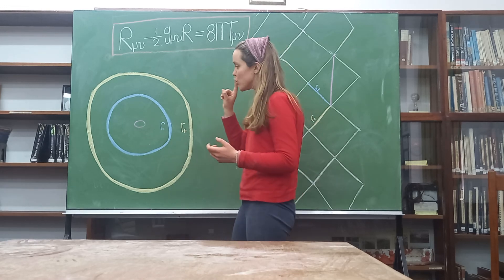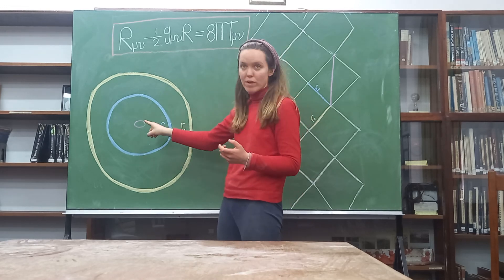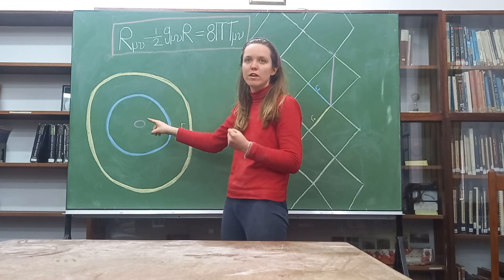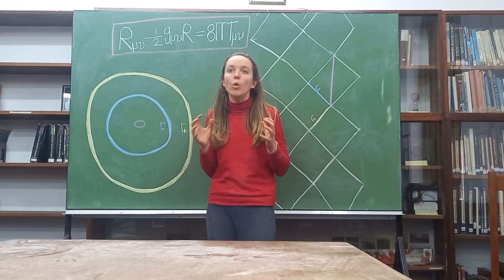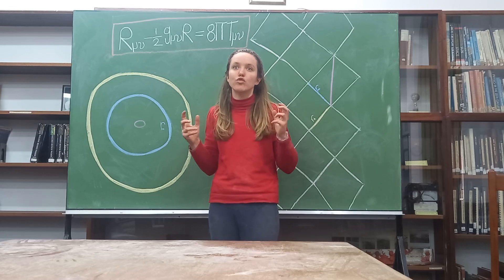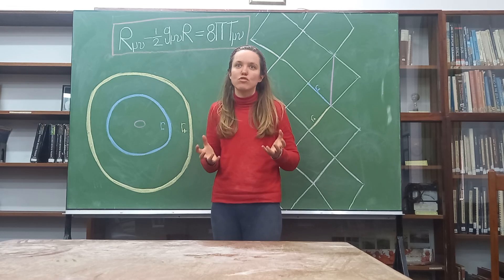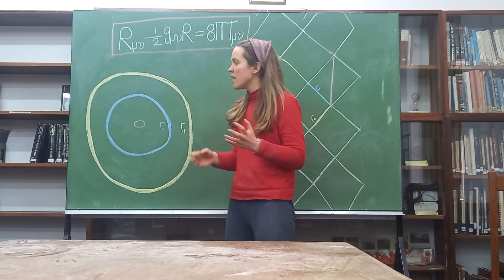In the centre you will see a pink ring. That is called a singularity. All the mass of the star is forced into that pink ring, which is a region of infinite density.